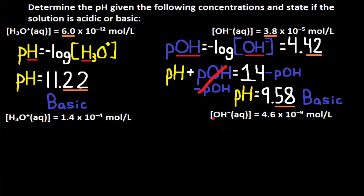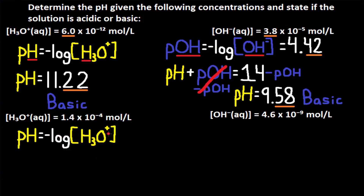The concentration of H3O+ is equal to 1.4×10⁻⁴ moles per liter. pH equals the negative log of H3O+, so we take the negative log of 1.4×10⁻⁴ and get a pH of 3.85. H3O+ has two sig digs, so the sig digs for pH only apply to the decimal numbers, giving us two decimal places. The pH is less than 7, so this solution is acidic.